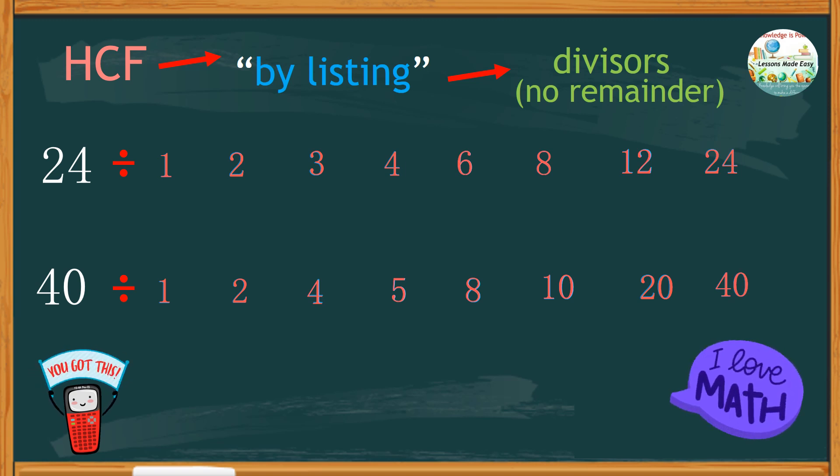Let's look at the factors and see what numbers are common for both. We have 1, 2, 4, and 8. Among these numbers, 8 is the greatest and therefore is the highest common factor or HCF.